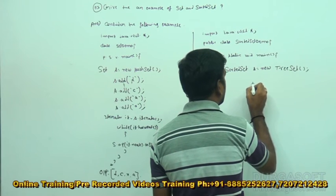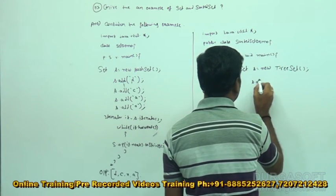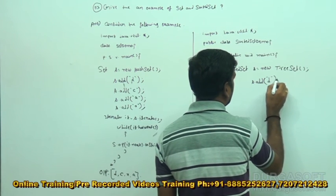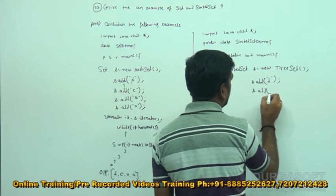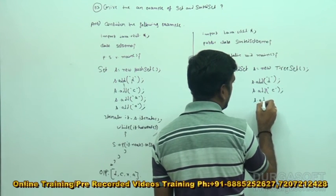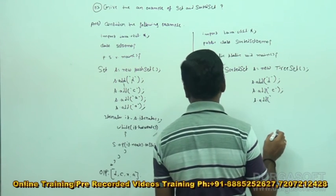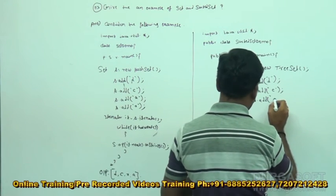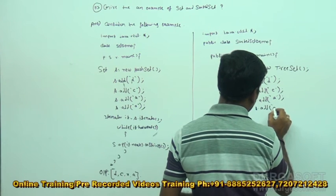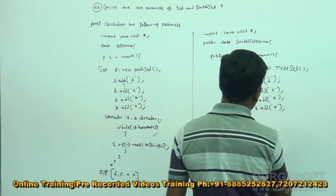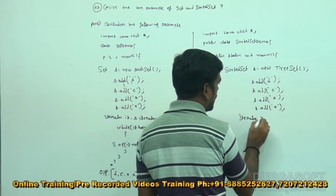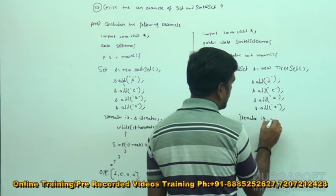Then next we can add the elements: S dot add D, S dot add C, S dot add A, S dot add X. So then we can iterate — iterator it is equal to S dot iterator.